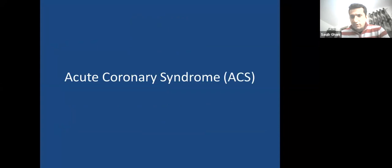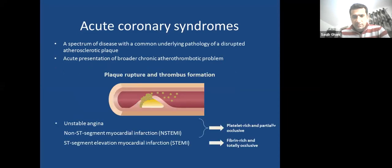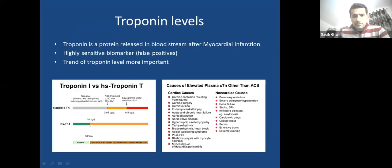Acute coronary syndrome is important because 40% of acute medical take is cardiology, and half relates to ACS. It is a spectrum of disease ranging from unstable angina through to ST elevation MI, all sharing a common underlying pathology: a disrupted atherosclerotic plaque. Plaque rupture causing acute occlusion causes STEMI; partial occlusion causes NSTEMI. STEMI plaques are more fibrin-rich and cause total occlusion; NSTEMI plaques are more platelet-rich causing partial occlusion.